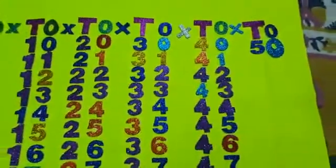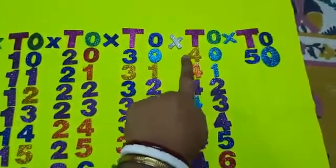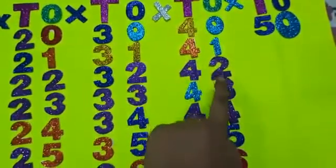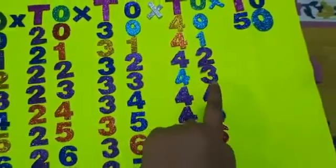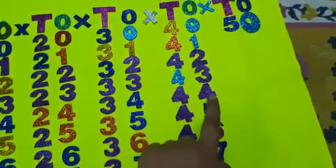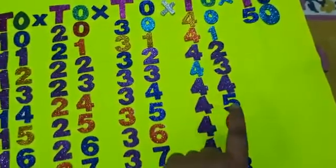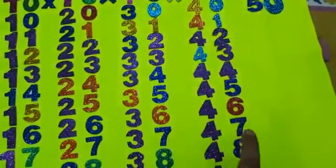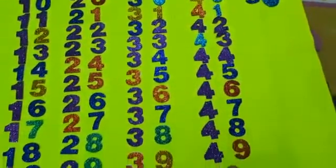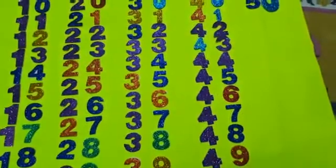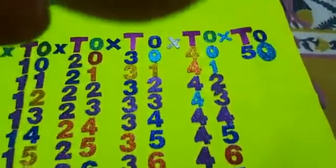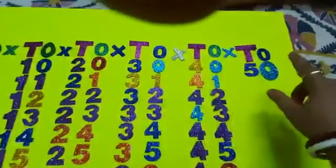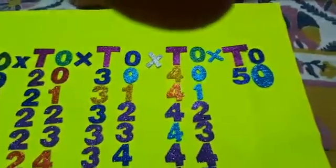Now we move on to the next T-O: 4, 0 — 40. 4, 1 — 41. 4, 2 — 42. 4, 3 — 43. 4, 4 — 44. 4, 5 — 45. 4, 6 — 46. 4, 7 — 47. 4, 8 — 48. 4, 9 — 49. And our last number, 5, 0 — 50, will come under the last T-O.